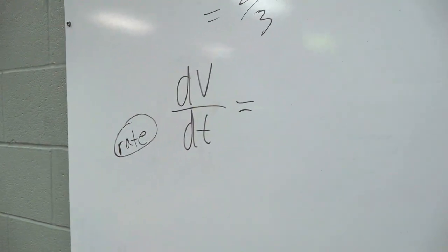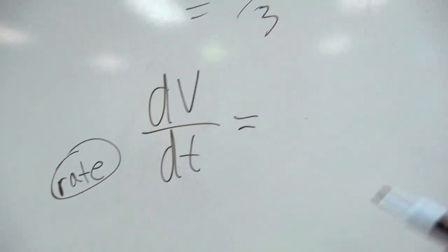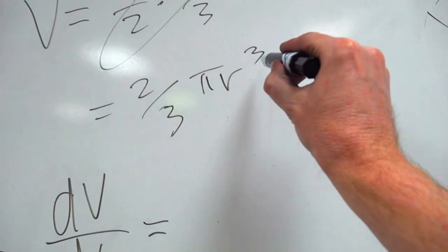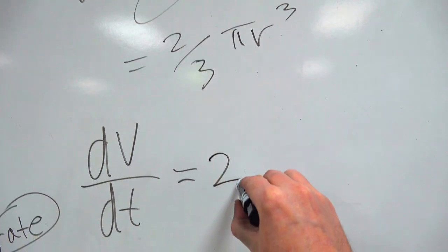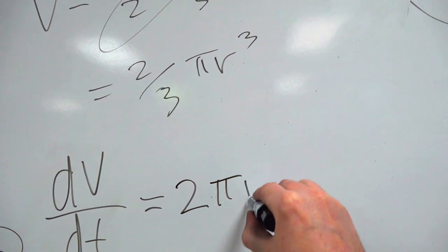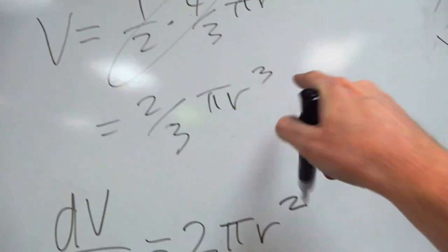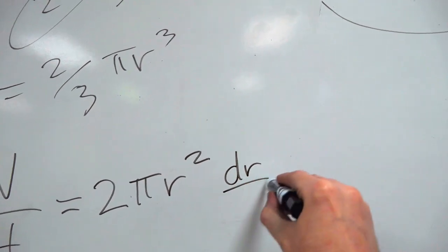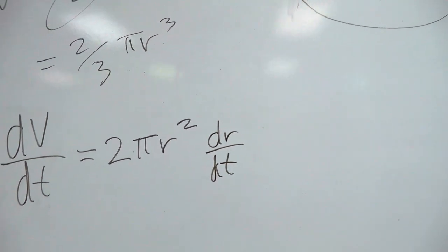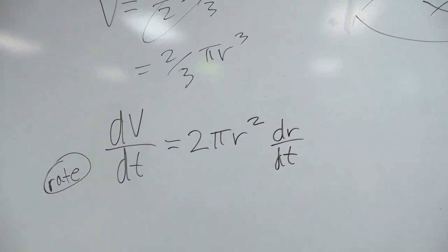The derivative of V, or colloquially written as V prime, of course. The three comes down, cross cancels with the three, and you get 2π r² times the chain rule of r, which is dr/dt, or colloquially written as r prime.